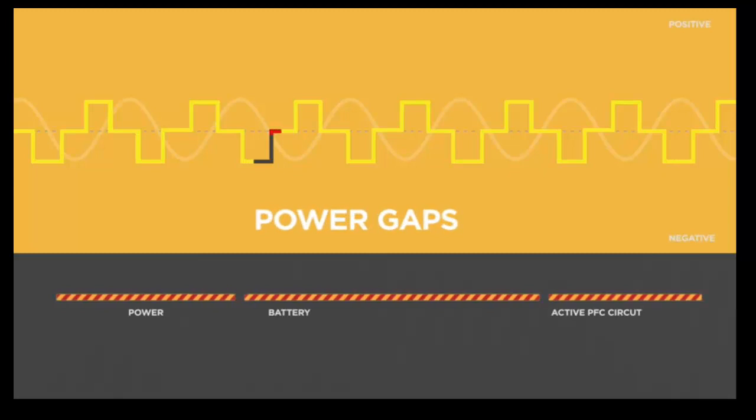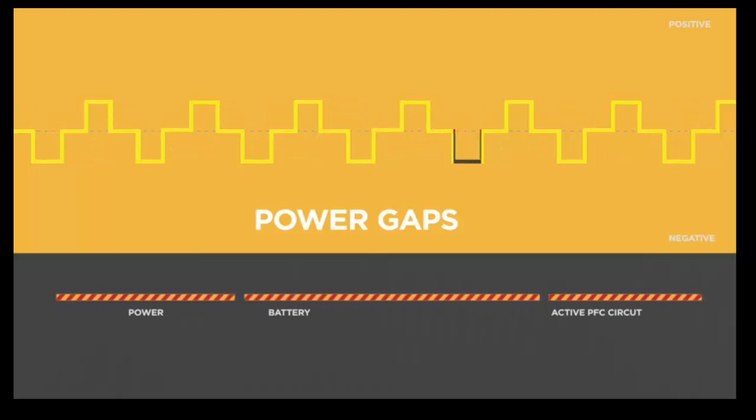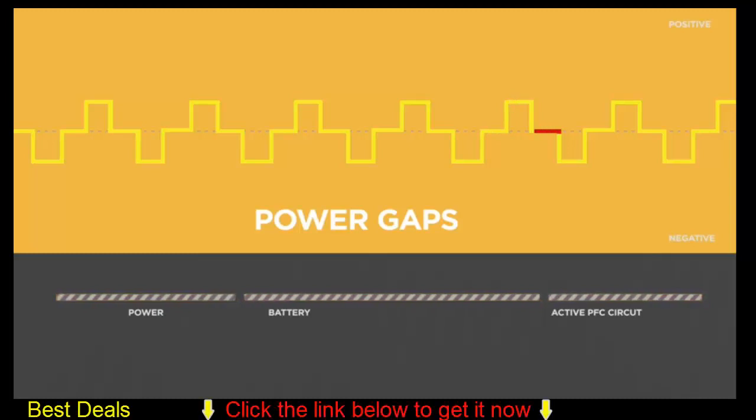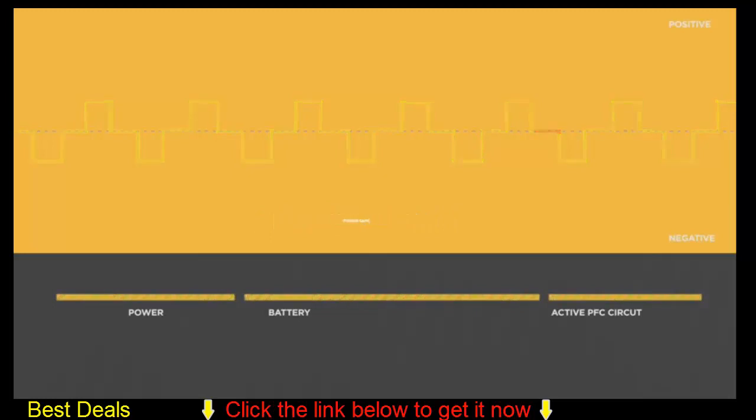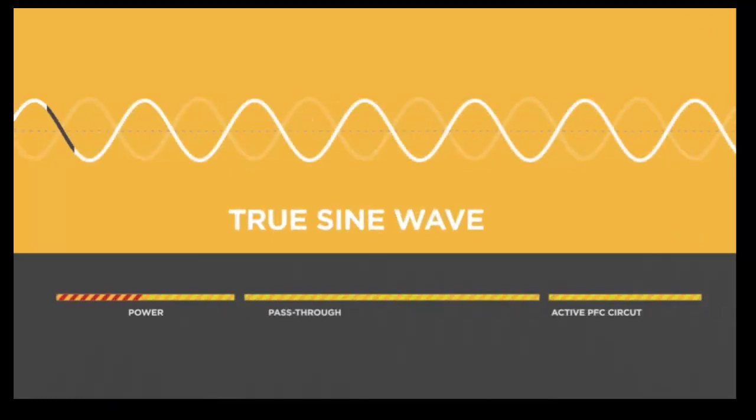These power gaps may create stress on the equipment, reducing its useful life. An active PFC circuit may detect the gaps as a loss of power and shut down the equipment without warning. This can result in equipment damage, data loss, or both.